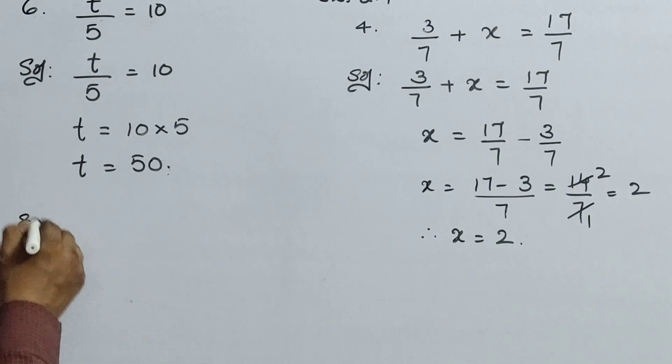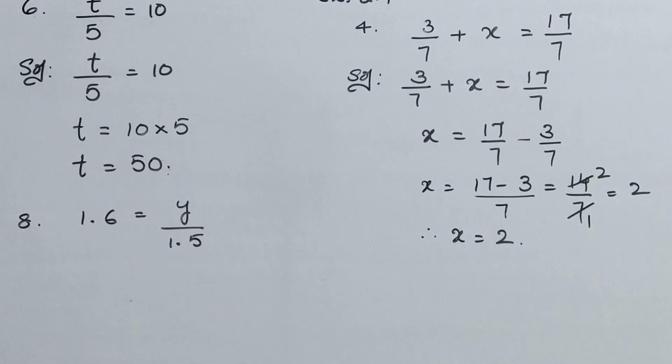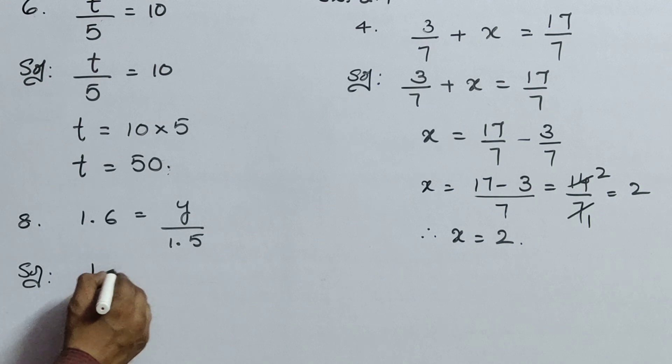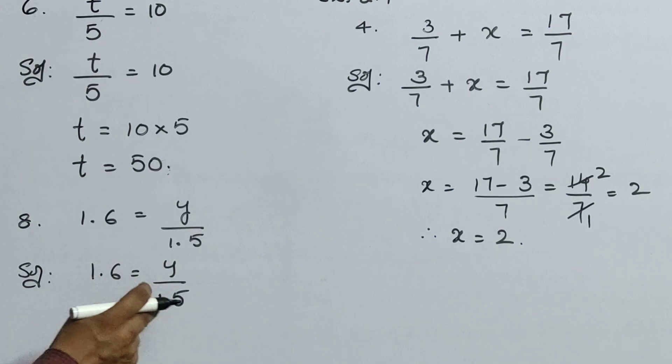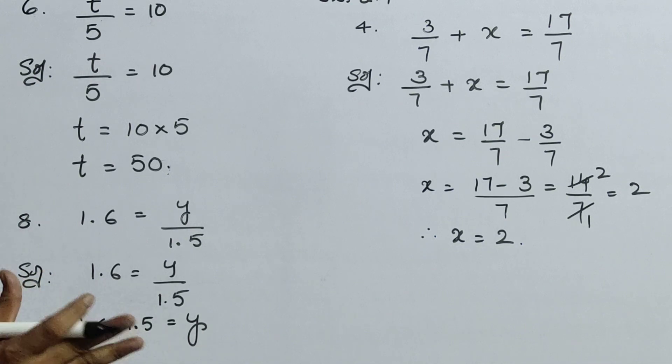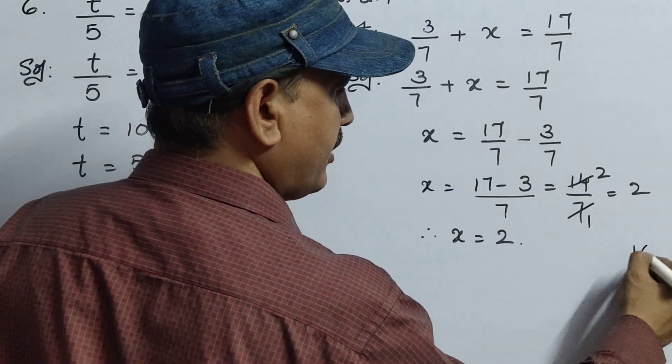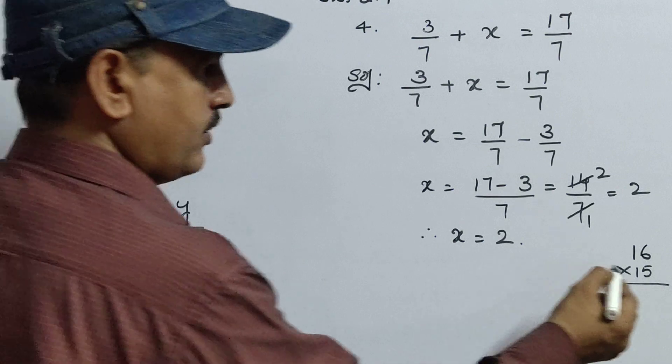Next, eighth sum: 1.6 equals to y by 1.5. Now y by 1.5, so first you just send this one to this side. That means 1.6 into 1.5 equals to y. Now if you want to multiply it decimal-wise, you can multiply. Or else I will give you some clue here. You can change this, anything both are same only. If you know it's well and good. See here, if you know means, do your rough work: 16 into 15. Don't go for the decimals first.